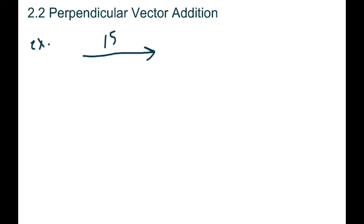It says the south component is 11. When you're drawing vectors, you always want to draw your first one and put the arrowhead so you know which direction it's going - this one's going east. Then start your second one from where that one ended and go south. So we'd have 15 east and then 11 south.